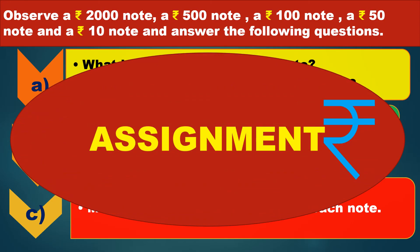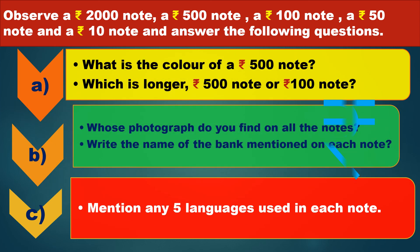Today's assignment: Observe a 2,000 rupee note, a 500 rupee note, a 100 rupee note, a 50 rupee note, and a 10 rupee note, and answer the following questions. What is the color of a 500 rupee note? Which is longer, the 500 rupee note or the 100 rupee note? Whose photograph do you find on all these notes? Write the name of the bank mentioned on each note. Mention any 5 languages used in each note. Write down these questions neatly in your notebook.